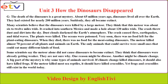The plants were killed. The oceans were poisoned. Very soon, there was no food left for the plant-eating dinosaurs. When they died, there was no food for the meat-eating dinosaurs. The meteor killed about 70% of all plants and animals on earth. The only animals that could survive were small ones that could eat many different kinds of food.